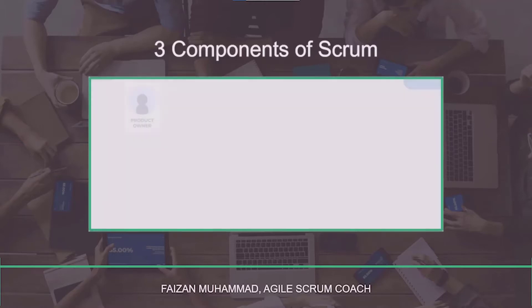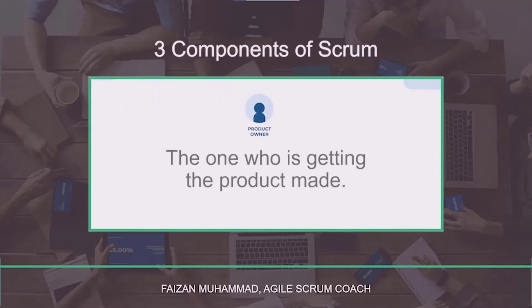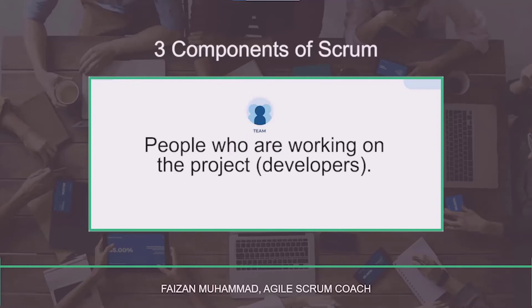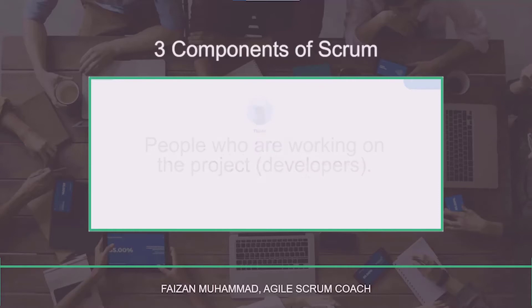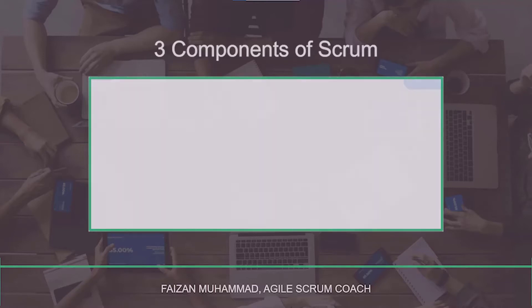The first component is the three scrum roles, which includes the scrum product owner, the scrum team, and the scrum master. The scrum product owner is the one getting the product made. The scrum team are the developers working on the project. The scrum master is a member of the team who leads all this — there is no separate project manager. This is a self-sustaining, self-organizing team.